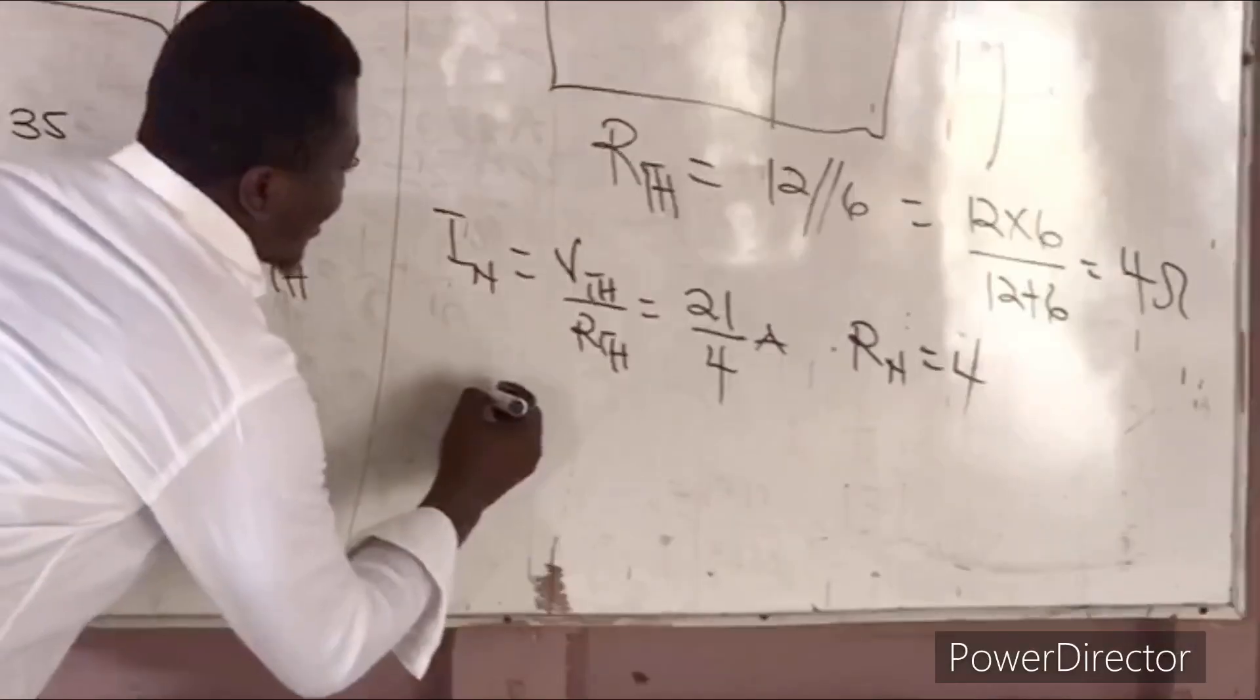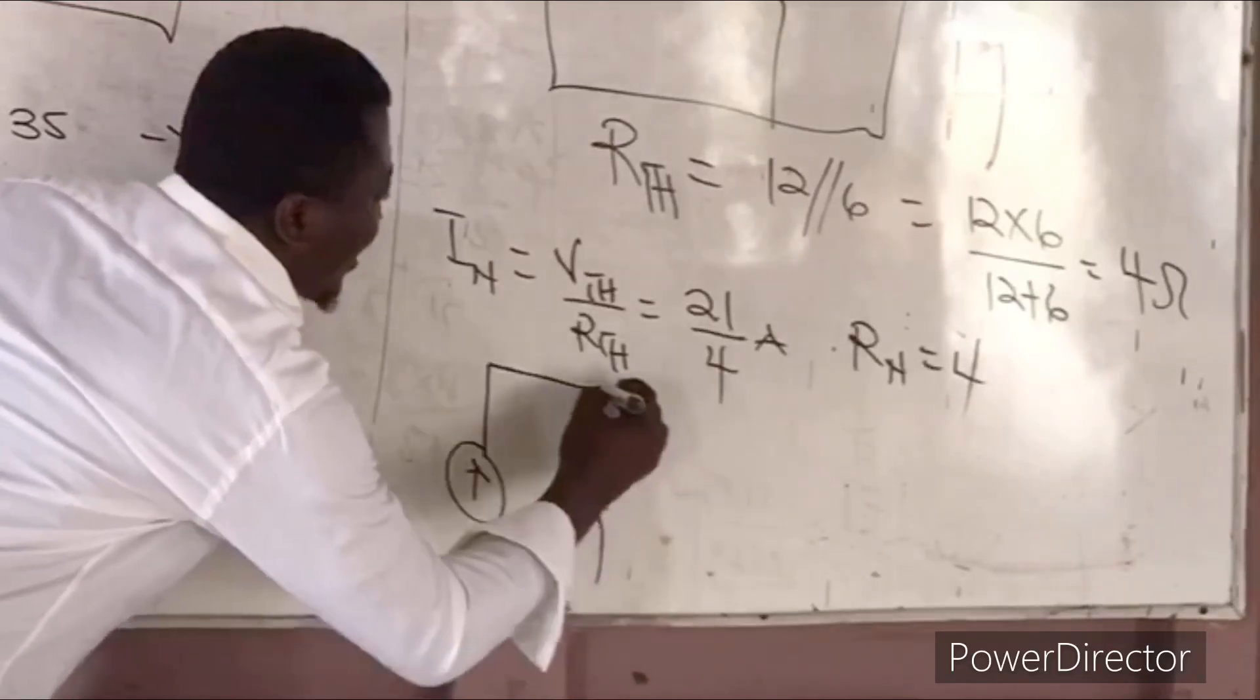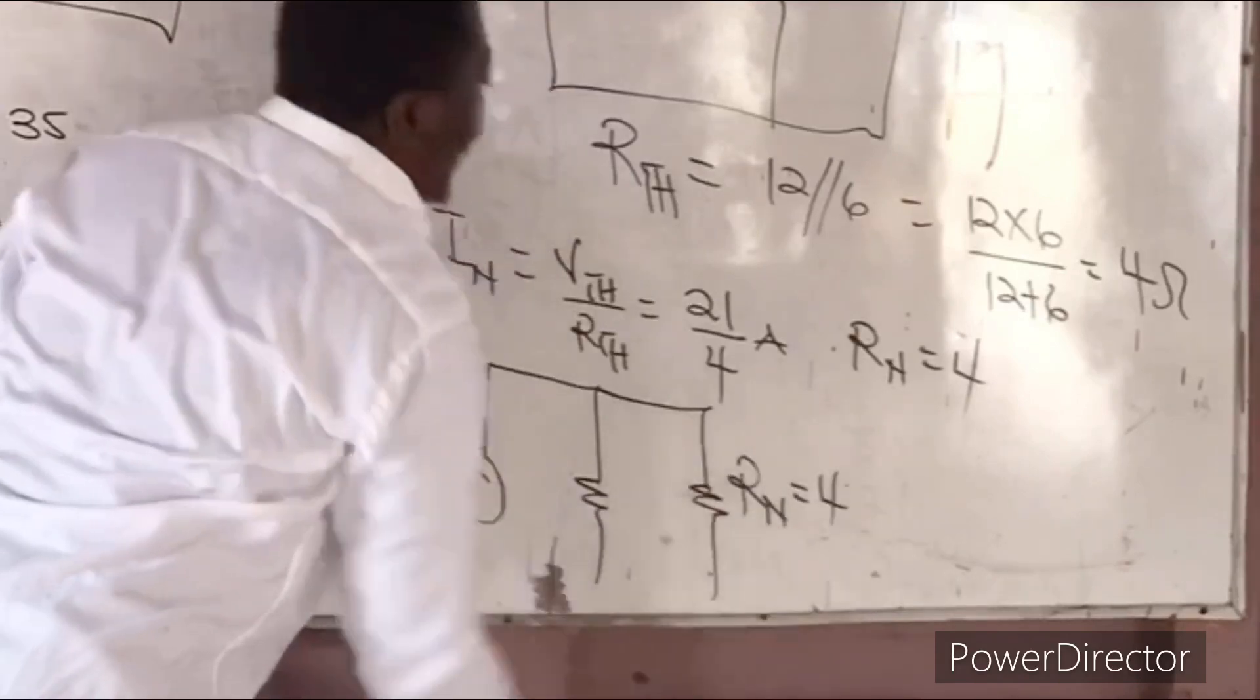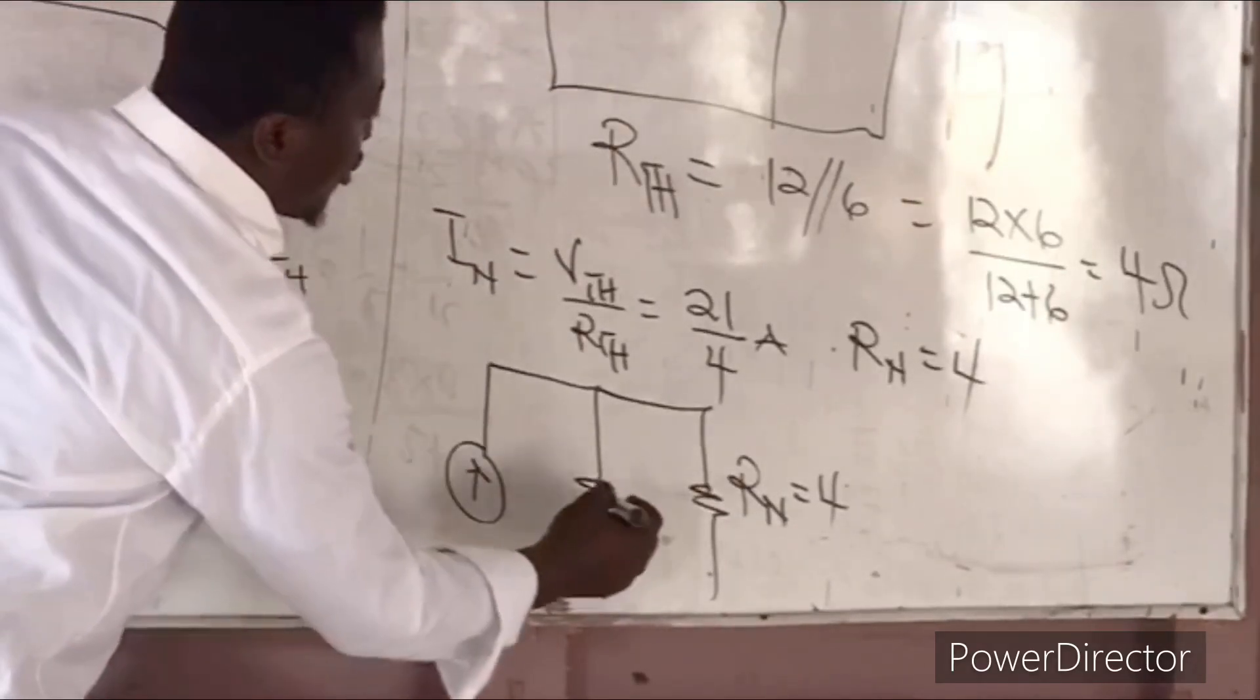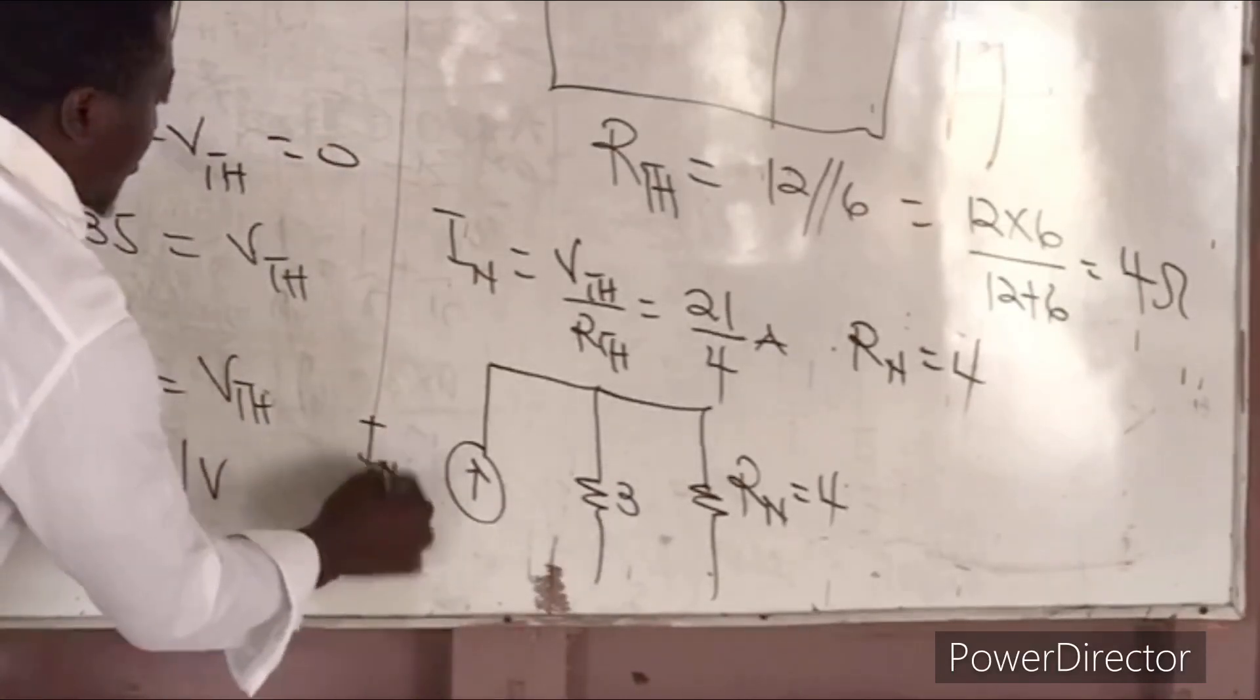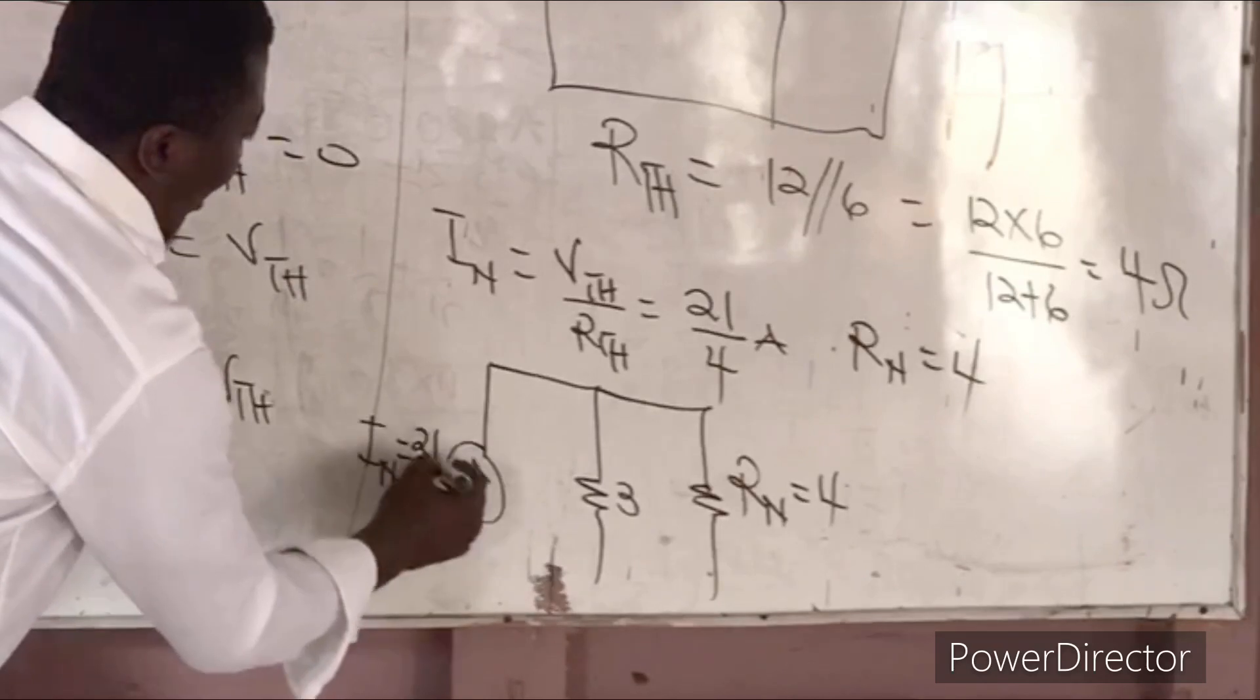We want to use Norton's equivalent circuit. Norton's equivalent circuit is different from Thevenin's equivalent circuit. Norton's equivalent circuit is given by a current source and you have a resistance, two resistors in parallel. So this is our RN, which in this case is 4, and this is the one we removed, the one we removed was 3 ohms. And this is our IN, is 21 over 4.